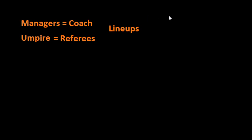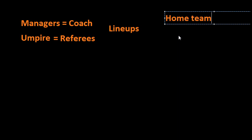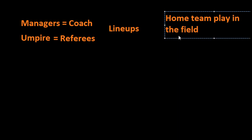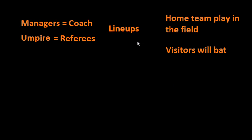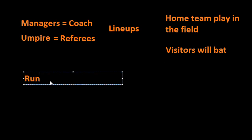To actually start the game, the traditional way is that the home team will play in the field, putting them on defense. Baseball is the only sport in which the defense has the ball. The visiting team will bat, starting with the first guy in their lineup, who will come up to face the pitcher. So the visitors will be on offense.